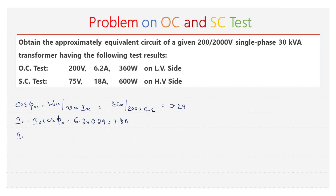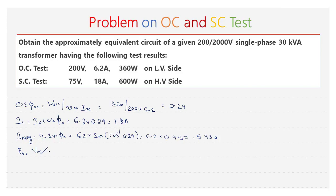R0 is equal to VOC divided by Ic, that is 200 divided by 1.8, which is 111.11 ohms. The magnetizing current Im is equal to IOC into sin φOC. Sin φOC is 0.95, so Im equals 5.93 amperes. Next, X0 is equal to VOC divided by Im, that is 200 divided by 5.93, which is 33.7 ohms.